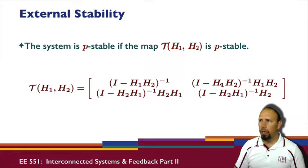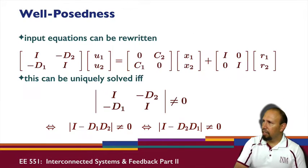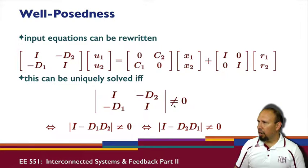So the issue of well-posedness is, does that condition on the D matrices, is that satisfied? And so this condition - that's the issue of well-posedness. And then the stability is related, is a different issue. So notice that if either the D1 or the D2 is zero, then this is automatically satisfied.